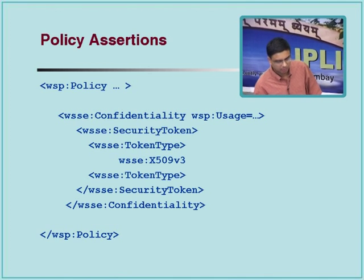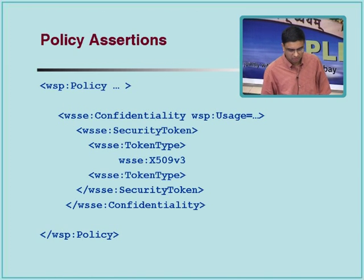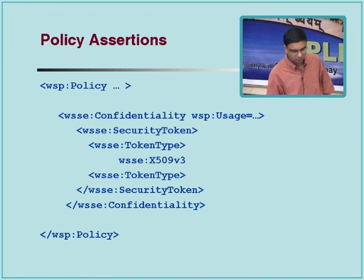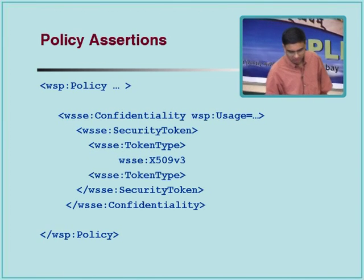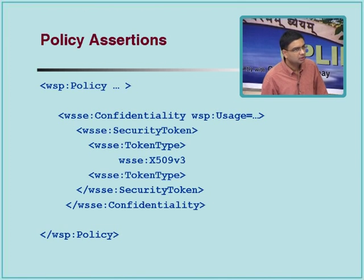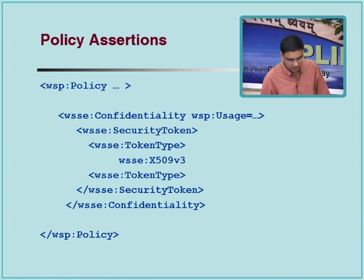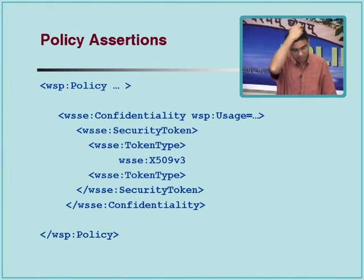Here is another example of a confidentiality policy. In this particular case, it has to do with an X.509 certificate of some form. We are just saying that this token is going to be a certificate of this particular kind. What does X509V3 mean would be defined somewhere for the system to understand — we understand it because we understand what X.509 means, but for the system to understand it has to be described somewhere.